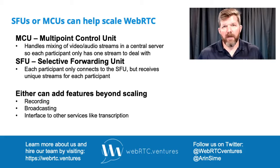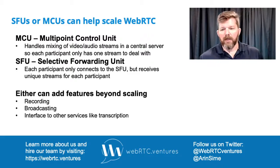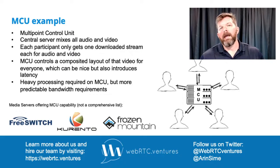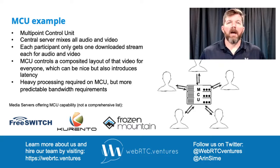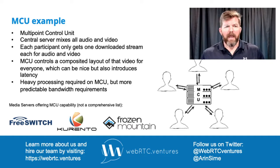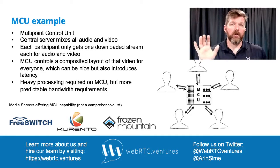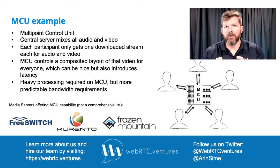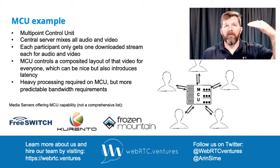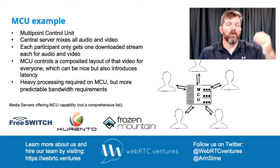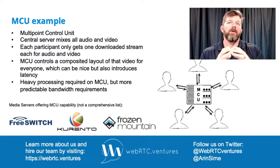In an MCU — a multi-point control unit — as shown in this diagram, you have a central server that everyone in the call connects to. So instead of these five users all having a mesh network of peer-to-peer connections, each of them only connects to the MCU. The MCU then does additional processing to take those five video streams and composite them together into a single video stream, which it sends out to everybody else. Each user connected to the MCU sends one set of audio and video up, and receives back one combined set of audio and video from all other participants.